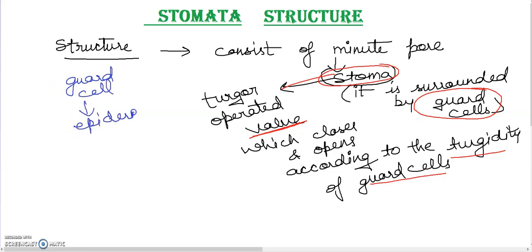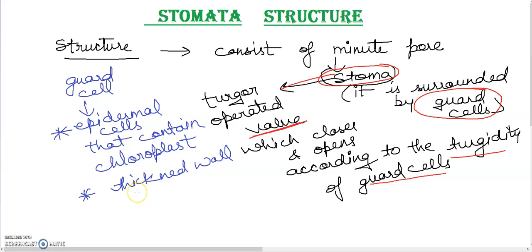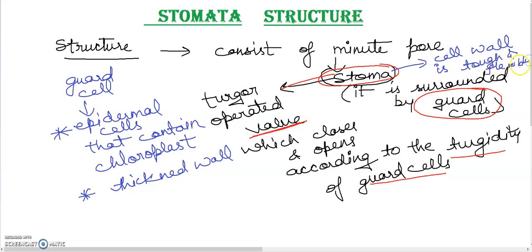Epidermal cells are unique — they contain chloroplasts, which is one of the important cell organelles in the plant. The guard cells have uneven thickened walls. There is a cell wall around the stoma. The cell wall around the stoma is very flexible, allowing it to change shape.